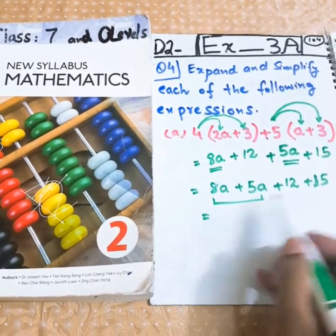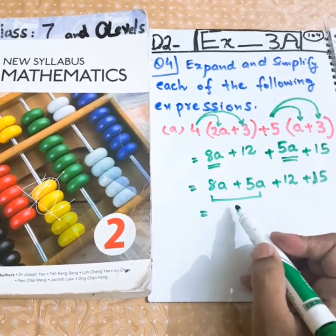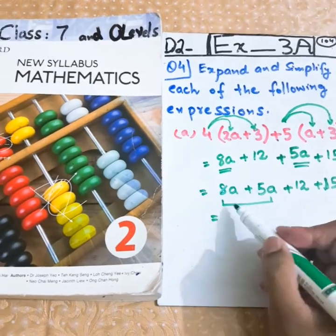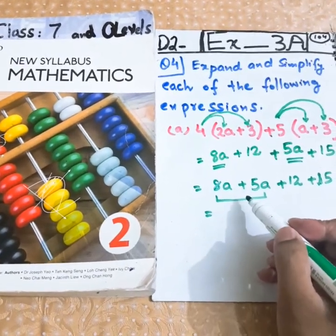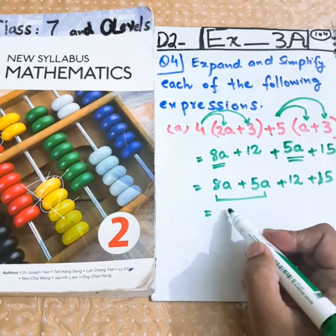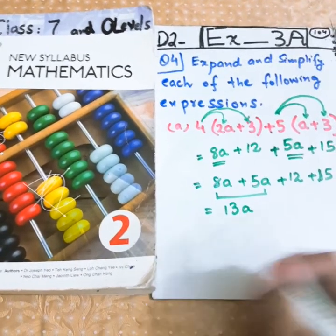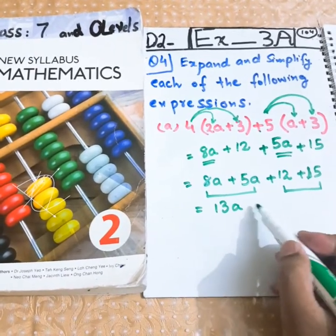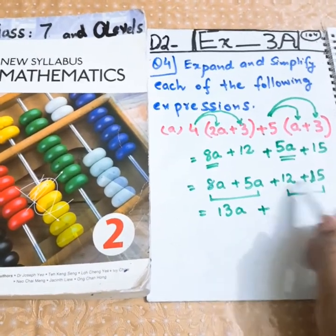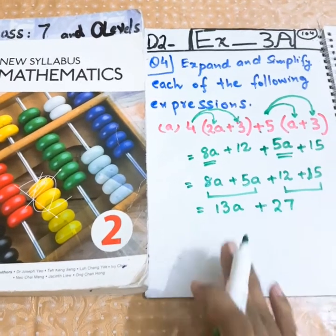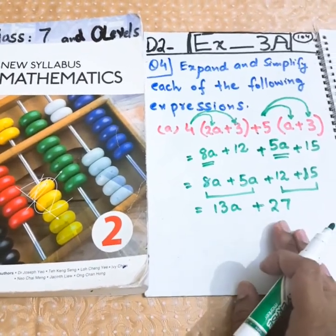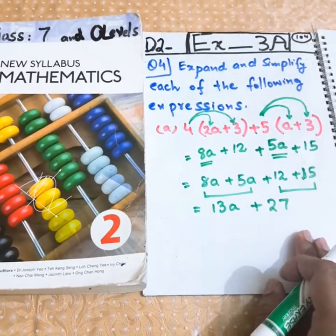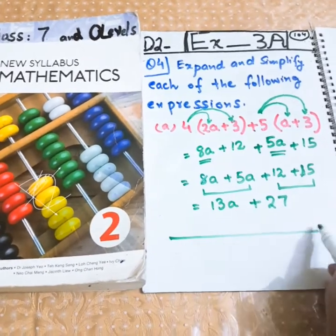8a plus 5a both have a's, so their coefficients will be added because there is an addition sign in between them. Both have the addition sign. 8a is also positive, 5a is also positive, so both of them will make up 13a. Now 12 plus 15, bigger value is 15, its sign is positive, so positive sign will be used. 12 plus 15 is equal to 27. Now 13 cannot be added in 27 because 13 has a but 27 doesn't have. So the question will be finished here. It is the answer: 13a+27.